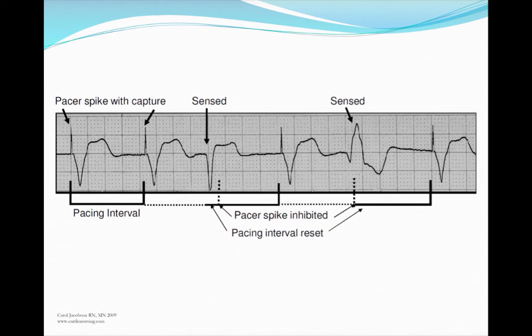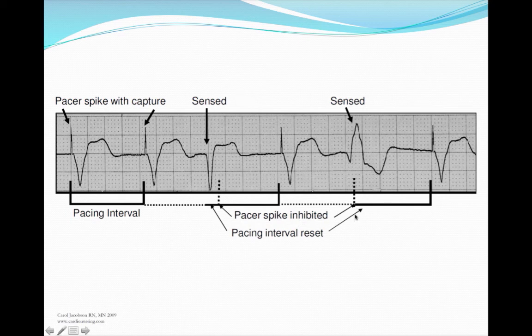In this picture, there's a pacer spike on the far left followed by a wide QRS — we have capture. On the bottom, the pacing interval shows pacer spike and wide QRS going along well. The third beat is the patient's own beat (looks like a PVC), and the dotted line shows where a pacer impulse should have been but wasn't, because the pacemaker sensed that the patient fired its own beat — the fence was just right and the pacemaker was inhibited. It then picks back up with a pacer spike and wide QRS.